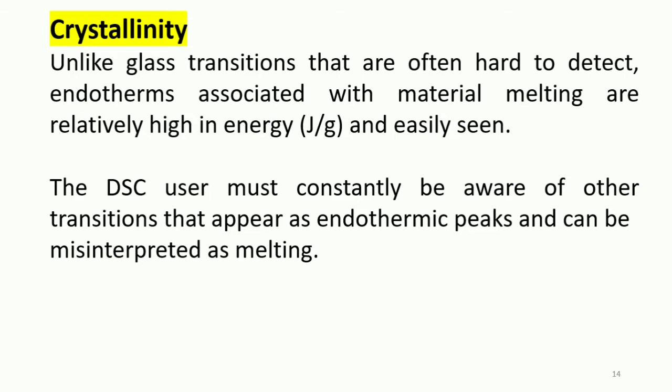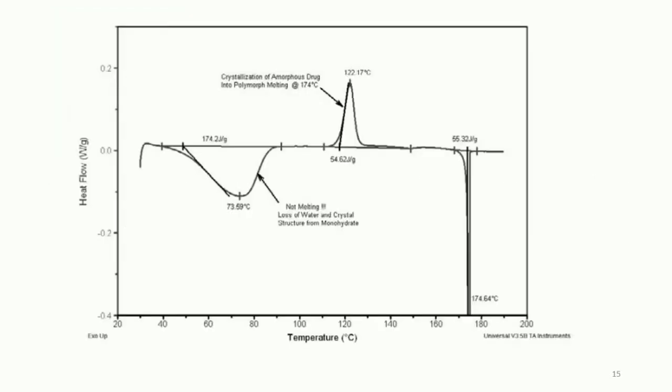The DSC user must constantly be aware of other transitions that appear as endothermic peaks and can be misinterpreted as melting. For example, the endothermic peak between 42 and 100 degrees Celsius in this figure is actually the result of water vaporization — evaporation from the pinhole pan as water molecules are lost from the monohydrate form of a drug.